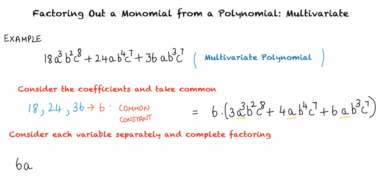Consider the variable b. We have b squared in the first term, b to the power 4 in the second term, and b cubed in the third term. Hence, we take b squared as common.